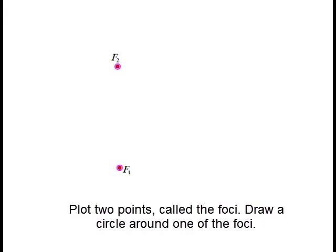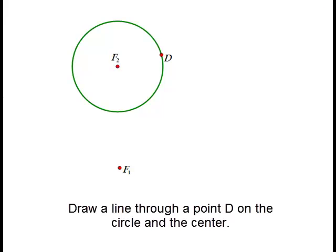Let's draw a circle around one of the foci. The radius of this circle is going to be F2 to D. Let's draw a line through point D on the circle that goes through the center of the circle as well.